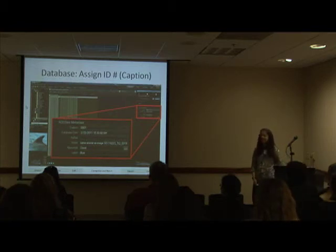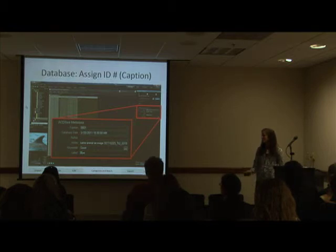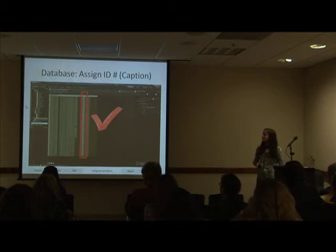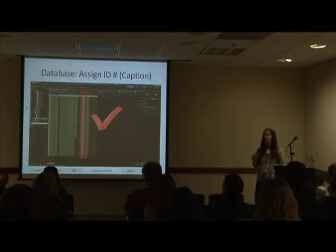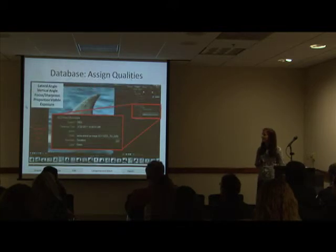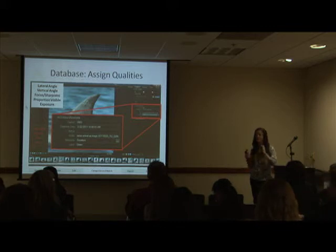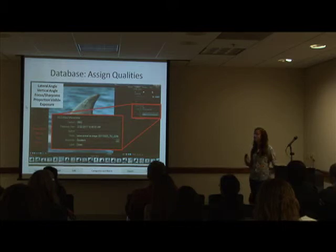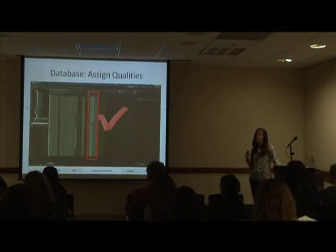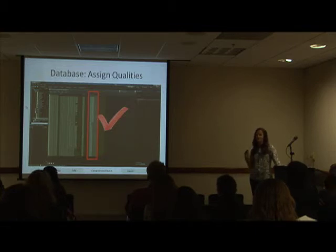I then take the left and right images of an animal and assign an ID, entering it in the caption of the ACDC metadata. You can use the details view of Manage mode and sort by captions to make sure all your individuals are getting the correct ID number — a good way to double-check yourself. I also assign qualities: excellent, good, fair, and poor. Greg will touch on this more, but it's important to standardize your data so you can exclude lesser-quality images and avoid biasing your analyses. Sorting by quality and opening all 'excellent' images together helps verify your consistency.